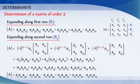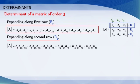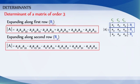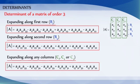We observe that the value of the determinant obtained by expanding along row R1 and along row R2 are equal. Similarly, when we evaluate the value of this determinant by expanding along any of the columns C1, C2, or C3, we also get the same value of det A.